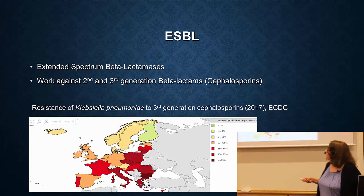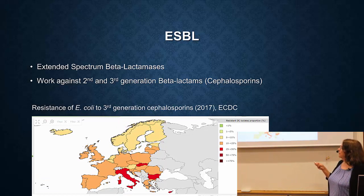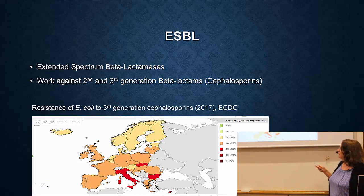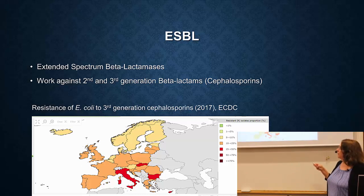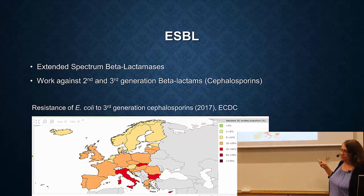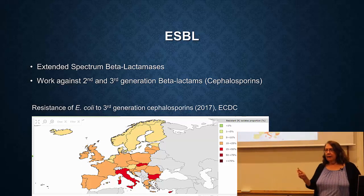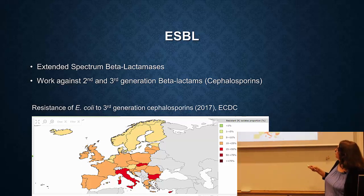Another very common bacteria is E. coli. This map doesn't look quite as bad, but again in southern Europe, in Italy, you have a huge problem with ESBL in E. coli. Sweden is looking pretty good. This is 2017 data. In the middle - Spain up to Germany - it's around 10% to 20%.